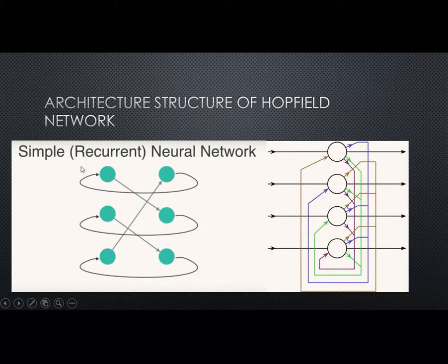Next, this is what we call the architecture structure of the Hopfield neural network. On the left-hand side, we have the simple recurrent neural network. As I said before, when we want to predict a word from the input to the output, this output will be passed to the next layer of prediction, but they can only read from the previous one.